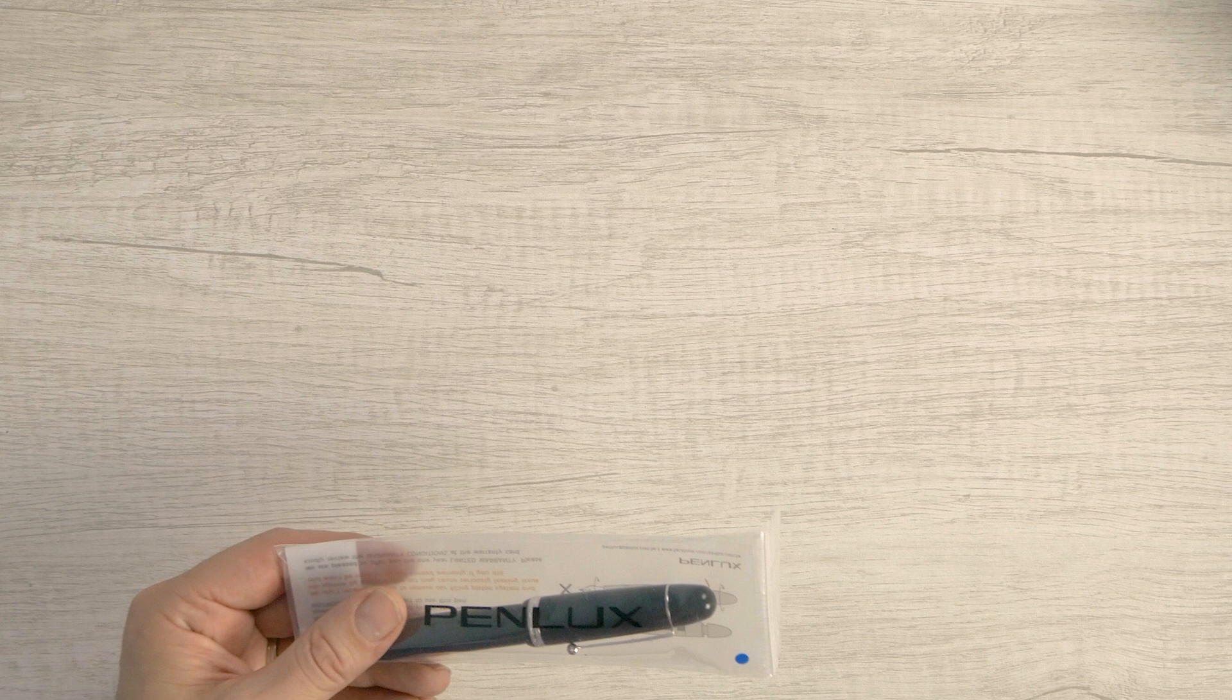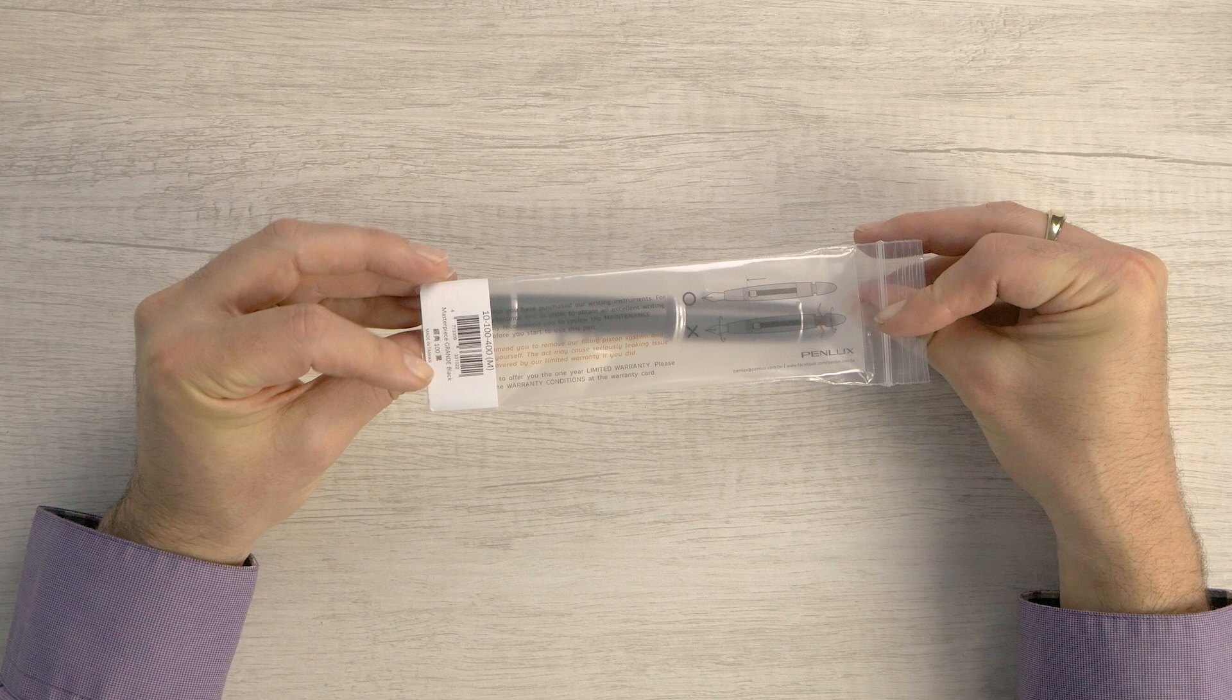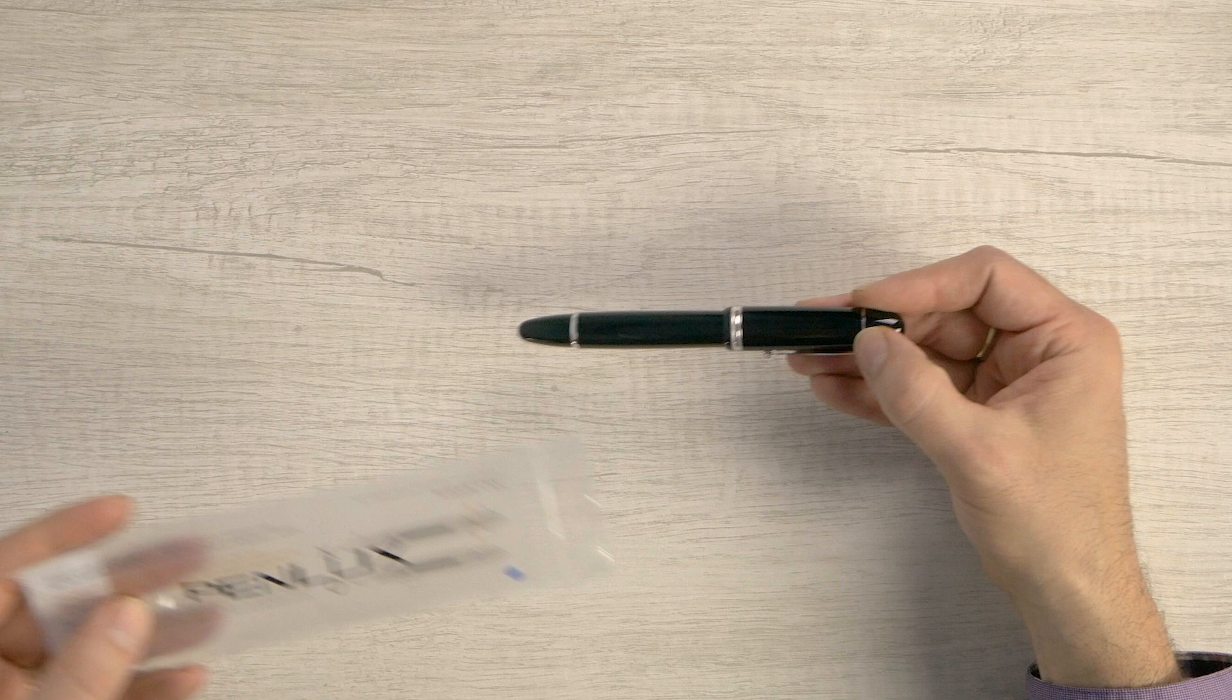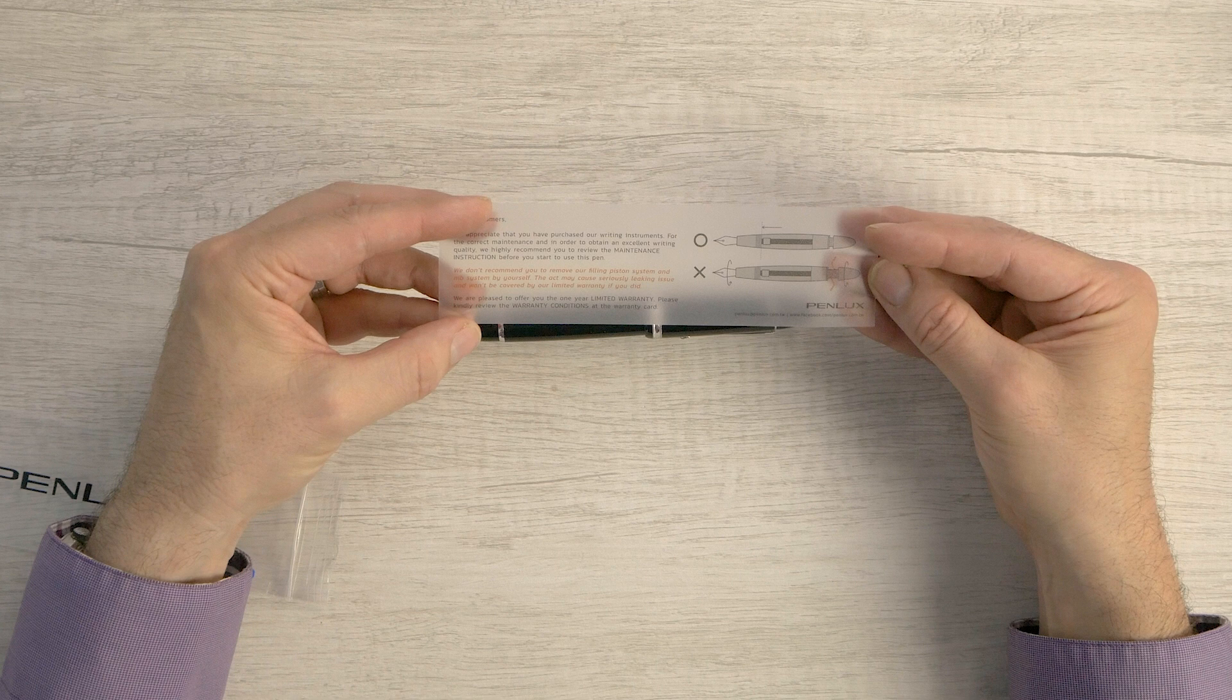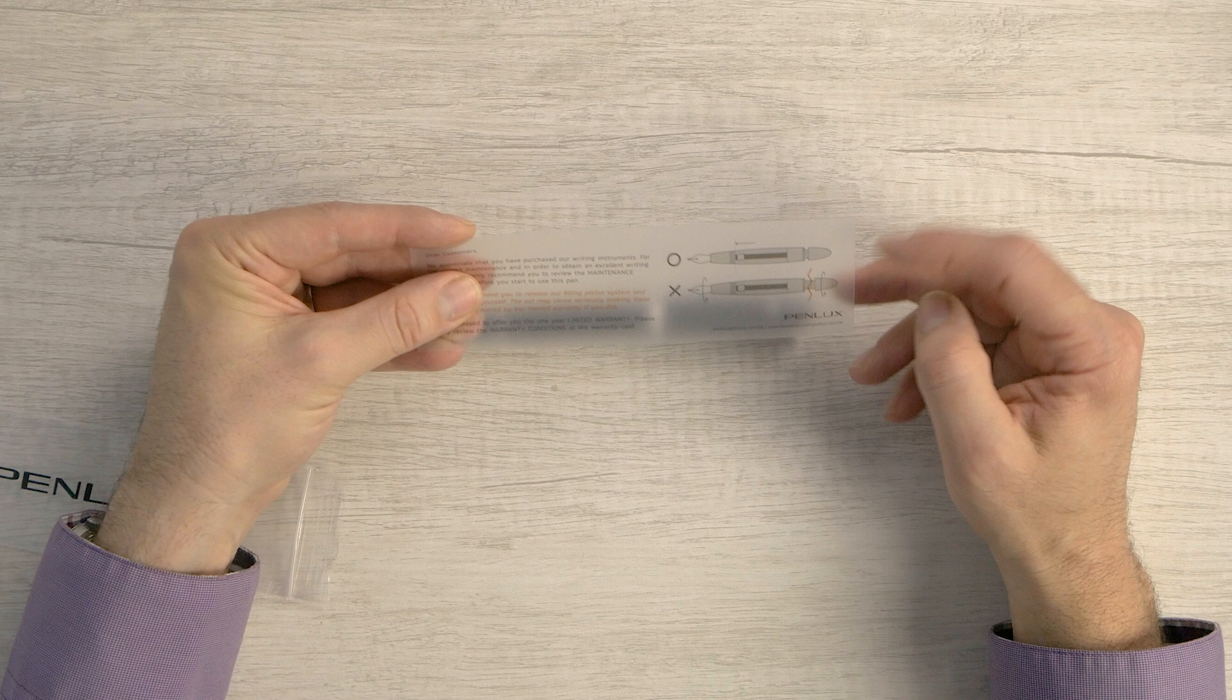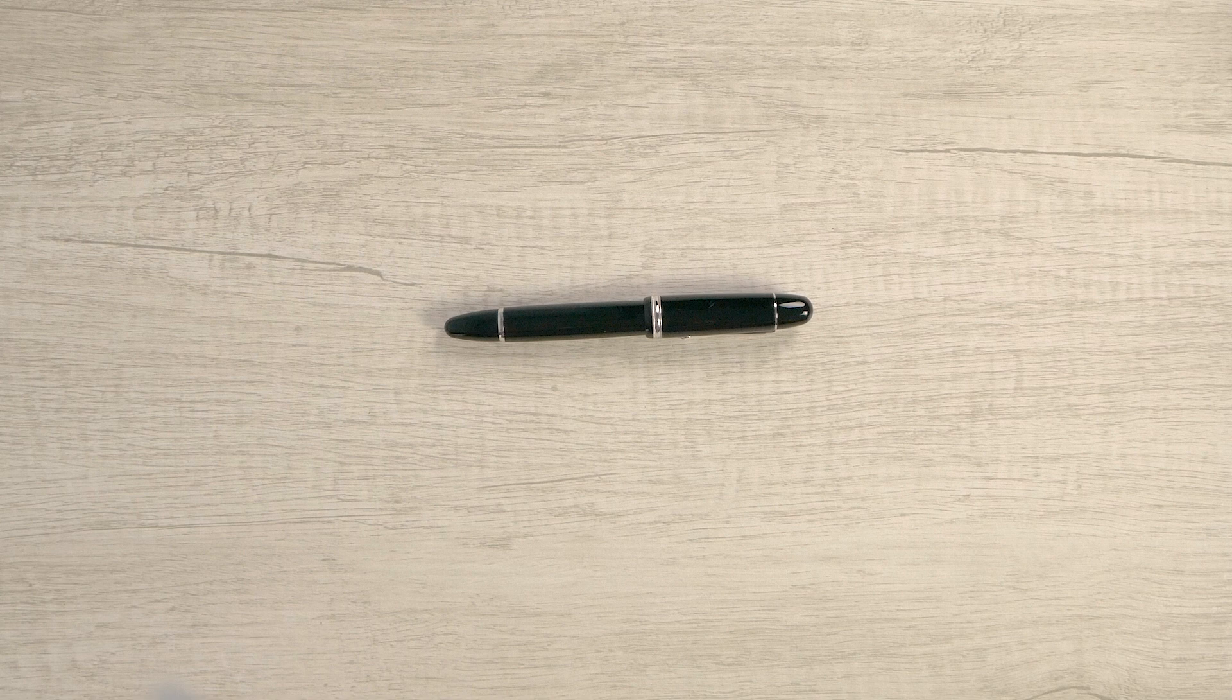So it comes in this little bag and it's got the identification mark. And we're going to pull it out. And then here is a kind of a plastic bookmark almost, if you will. Gives your warranty, tells you how to use the piston. Do not go that way. Do not twist the nib. We'll talk about that. So that's cute.